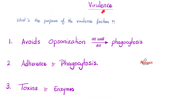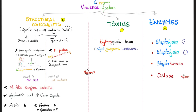Let's talk about the virulence factors of Streptococcus pyogenes. The bacteria needs them to avoid opsonization, for adherence, and to produce toxins and enzymes. We have structural components, toxins, and enzymes — six structural components, one toxin, and four enzymes.